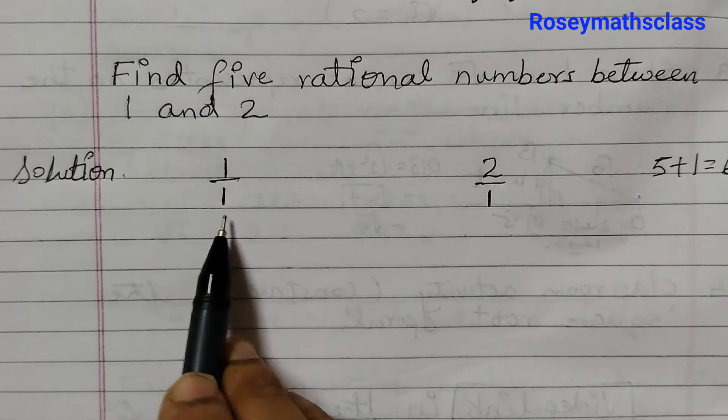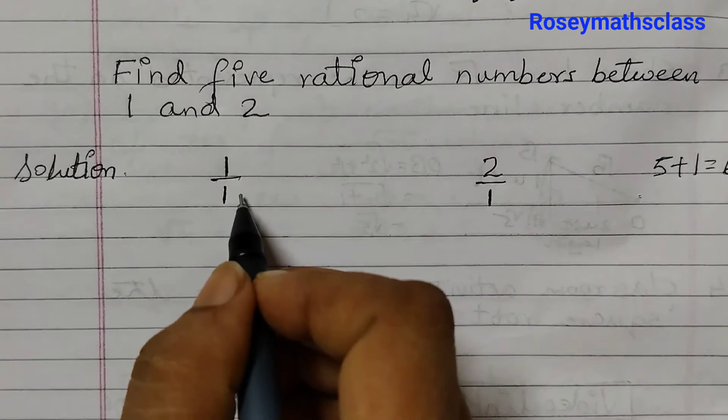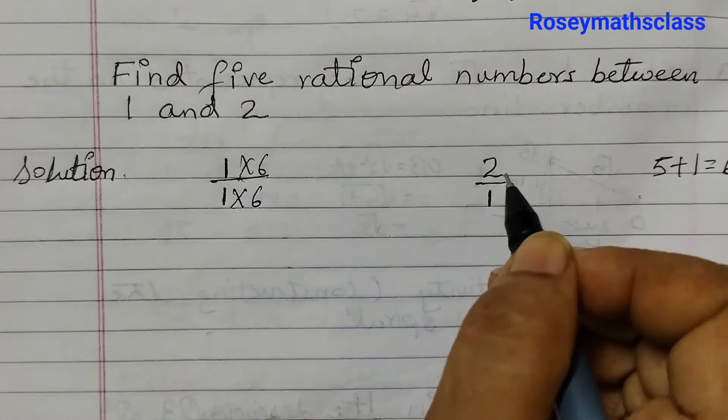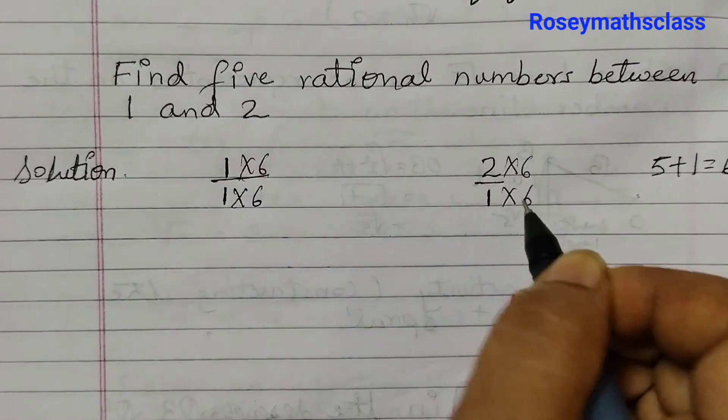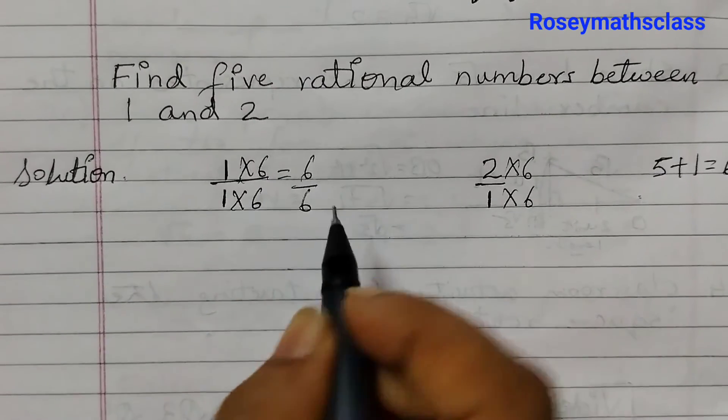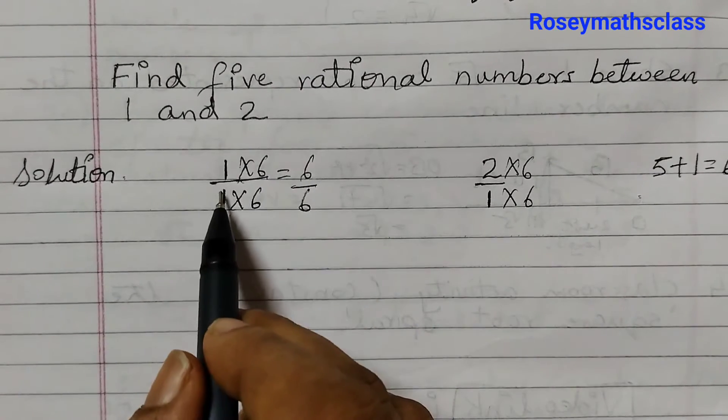Now we need to make the denominator 6 for both numbers, so multiply by 6. 1 times 6 is 6, 1 times 6 is 6. If you cancel these out again, you will get 1.